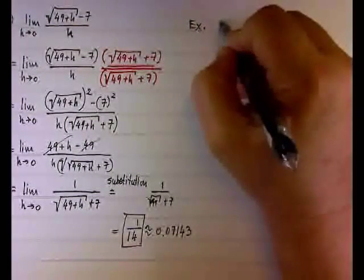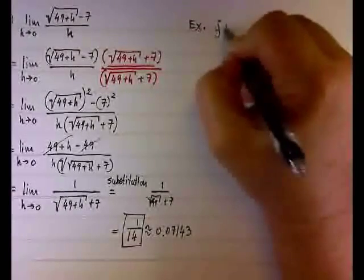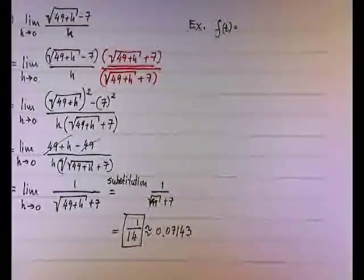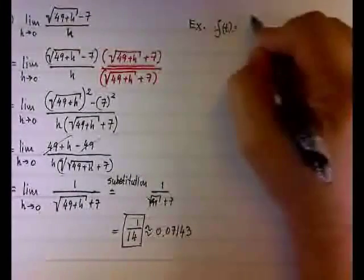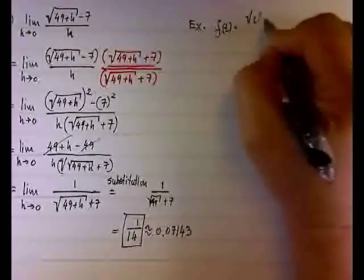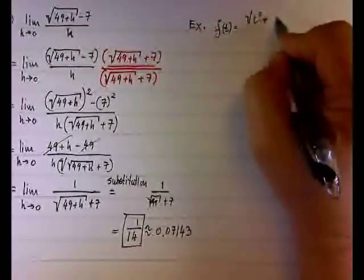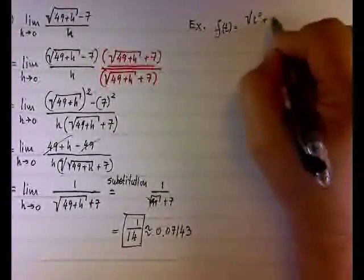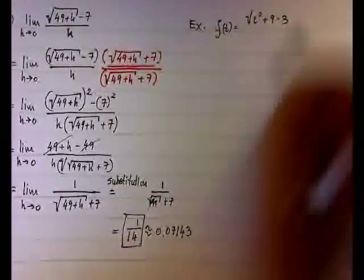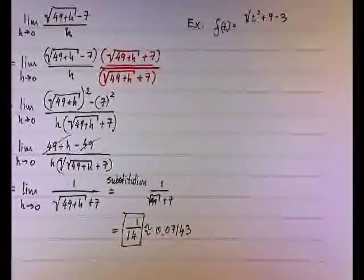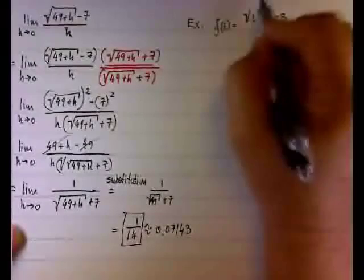This is the example that we had before. F of t equals the square root of t squared plus 9 minus 3. Actually, I'm thinking about it. This is exactly the same thing that we had now. Well, no, it's not exactly, so it's okay.